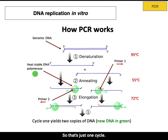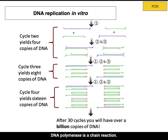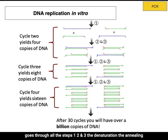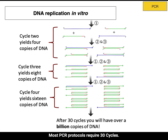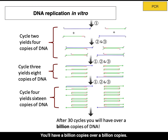That's just one cycle. PCR is a chain reaction — the polymerase used to make DNA from the template goes through all three steps: denaturation, annealing, and elongation, for several cycles. Most PCR protocols require 30 cycles. Starting with just one strand, after 30 cycles you'll have over a billion copies of DNA.